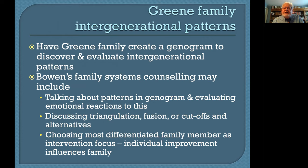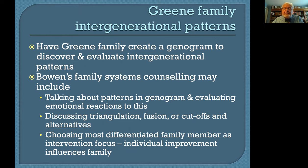In the Green family role play, we will have them begin to create a genogram in order to discover and evaluate intergenerational patterns. Counseling from that could include talking about the patterns in the genogram, evaluating emotional reactions, discussing any triangulation, fusion or cutoffs, and what the alternatives would be. Sometimes Bowen would choose the most differentiated family member as an intervention focus and help them go further in their differentiation, so they can act as a model for other family members.